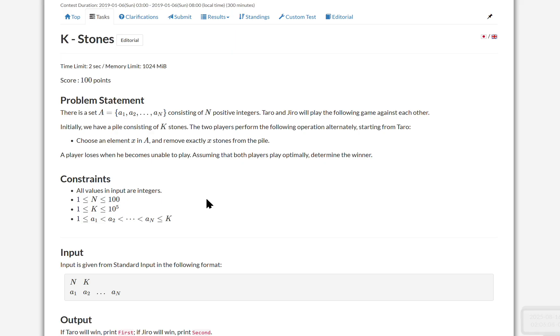Essentially, how this problem works is you have a pile of K stones, you have set A, A1 to A of N, and you have two players. You start from Taro, first player, and you can choose any element in A and remove exactly that many stones from that pile. And when you can't play, you lose.